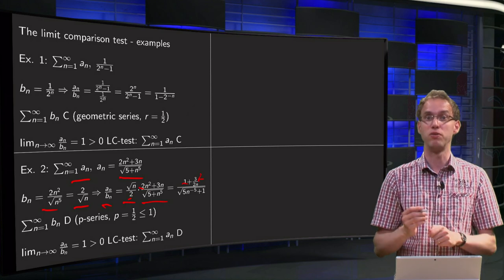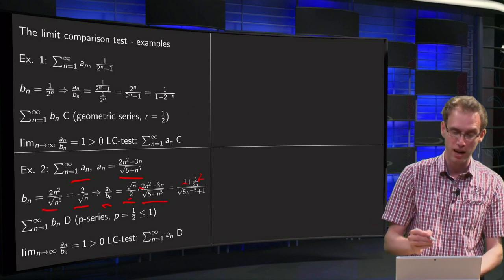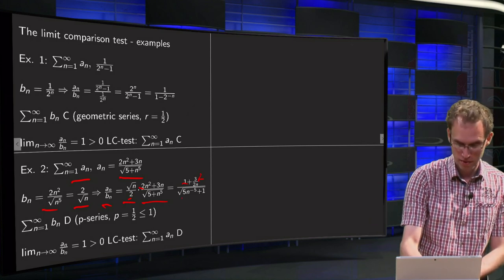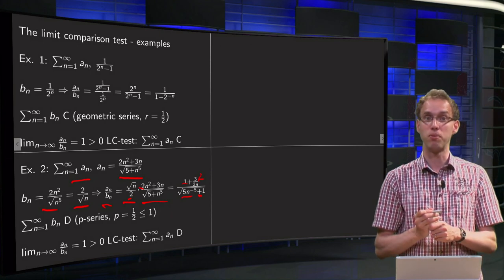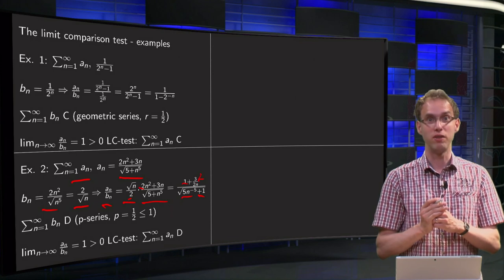And in the numerator we also have to divide by n to the power 5 over 2, so inside the square root we have to divide by n to the power 5. So we have a 5 divided by n to the power 5, and n to the power 5 divided by n to the power 5.